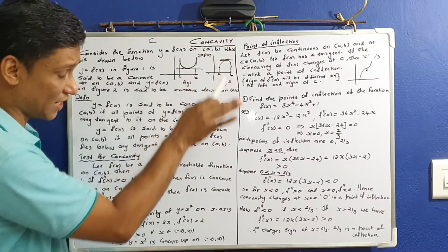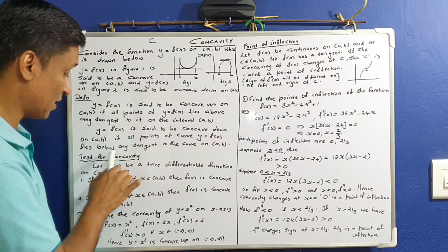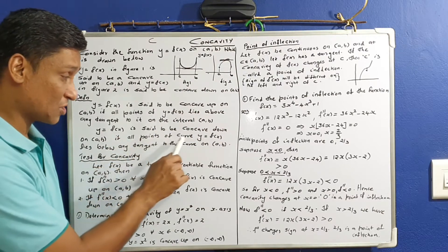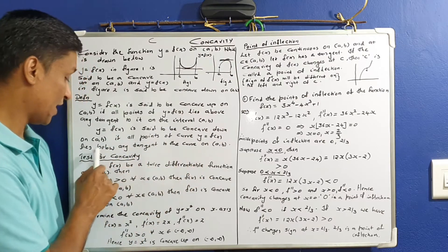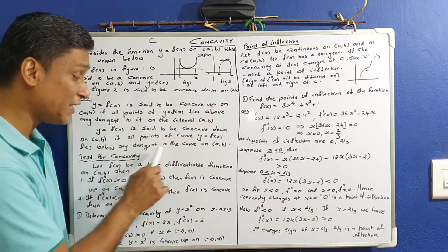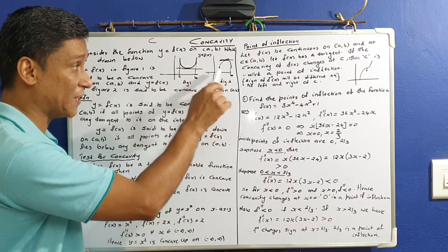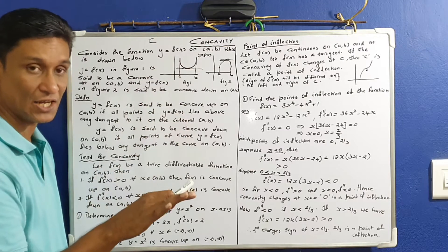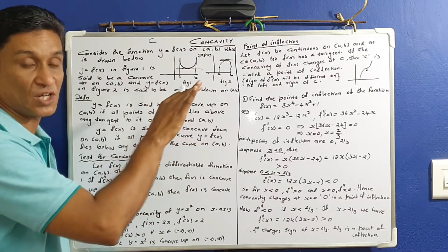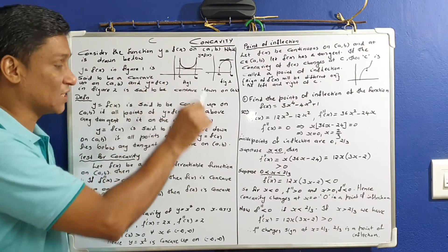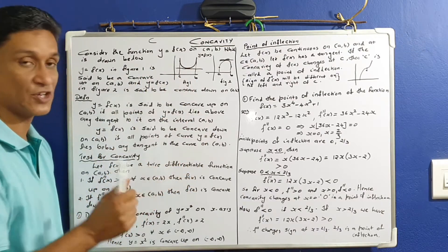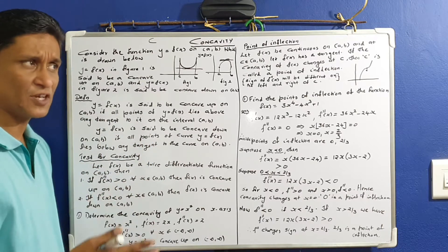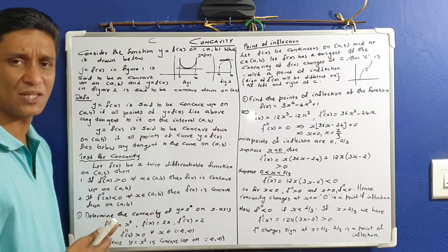Tangent in the middle — if all points of the curve y equals f of x lie below any tangent to the curve on AB, then the function is concave down. That is the standard definition of concave up and concave down in differential terms.